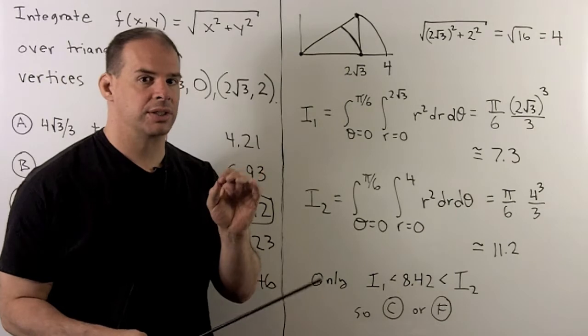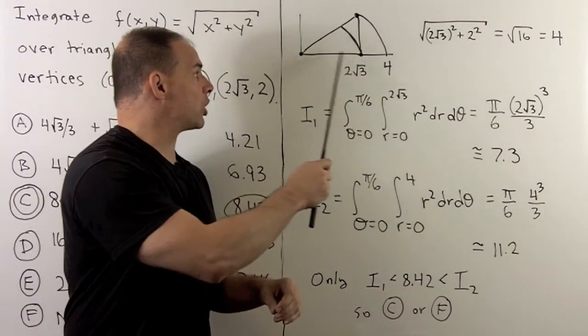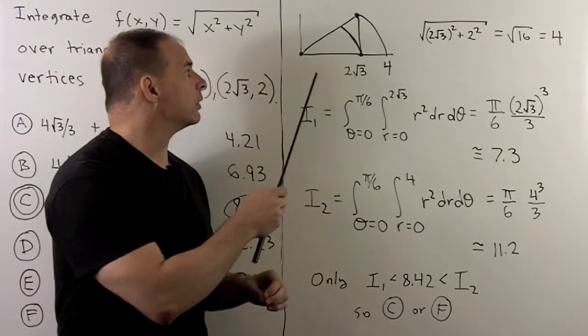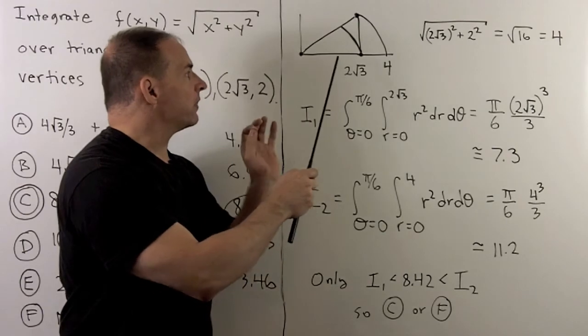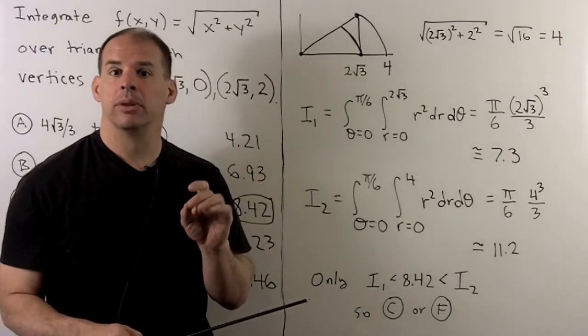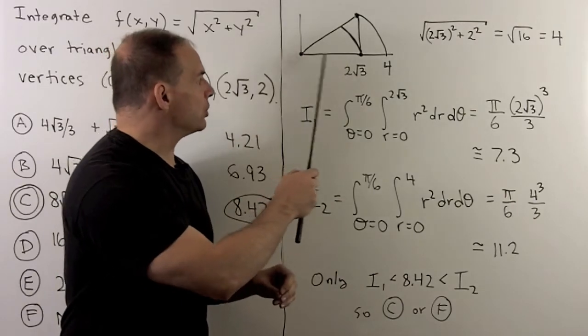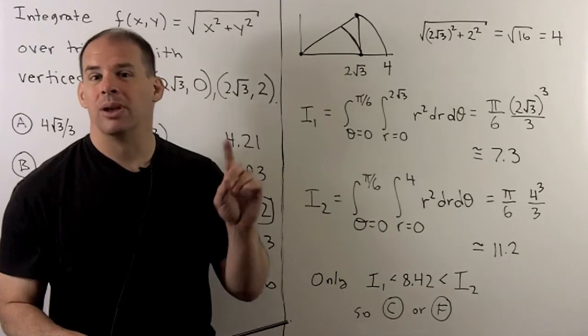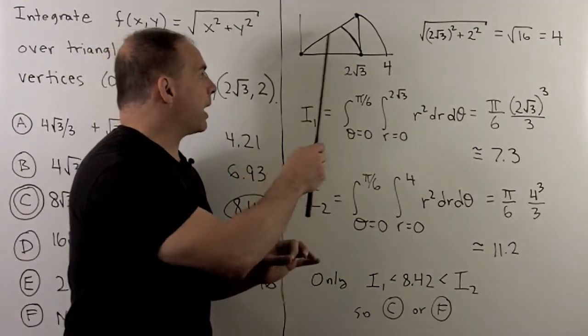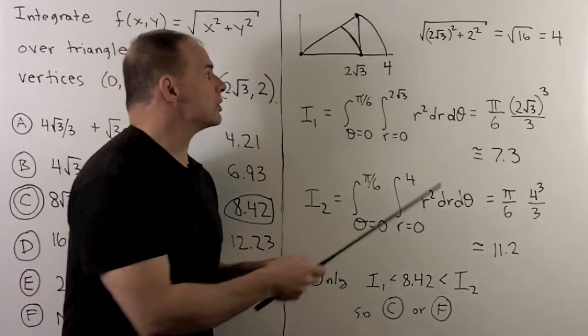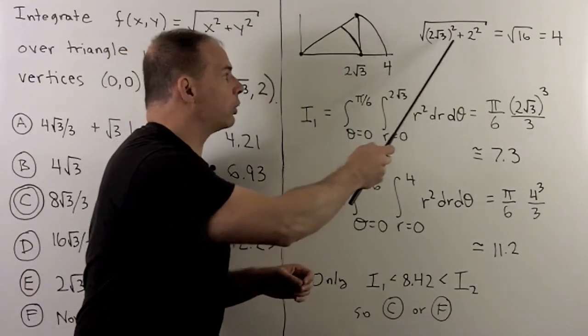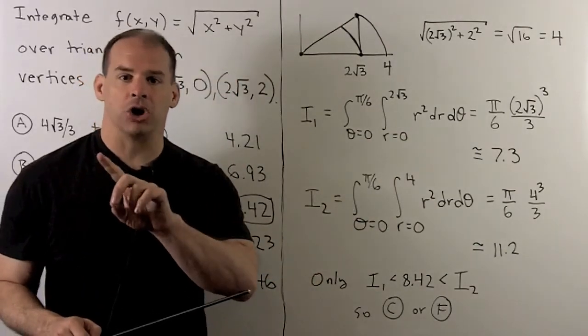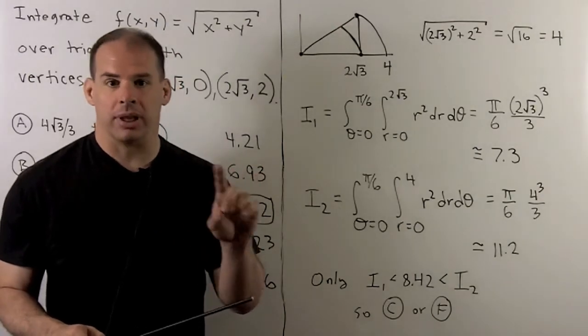Now, for our estimates, we draw our picture. We have our original triangle. Then we're going to fit it between two circular wedges. For the wedges, theta is going to go from zero to π over six. For the smaller wedge, r is going to go from zero to 2√3. For the larger wedge, r goes from zero to four. Why four? Four is just the length of the hypotenuse for the original triangle. If I take the sum of the squares and square root, we get four. Now, this trick only works because our function, r, is non-negative on the plane.